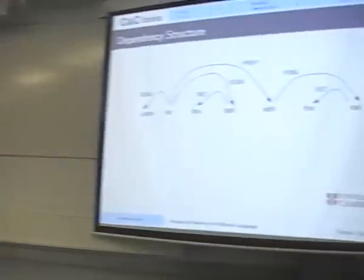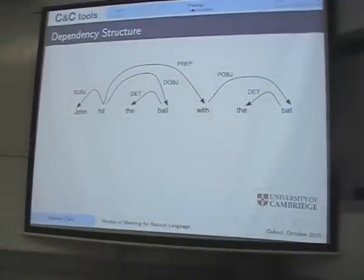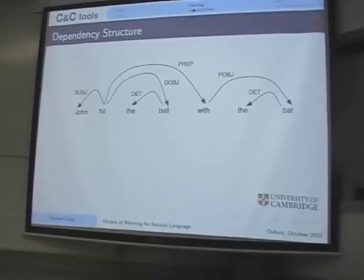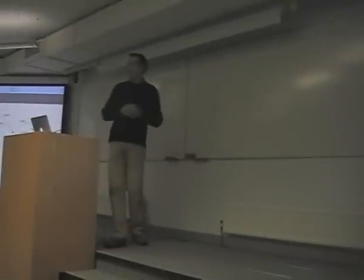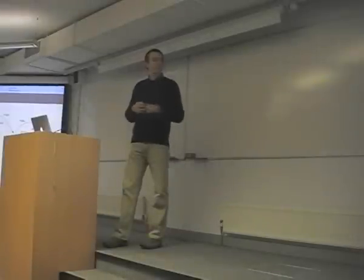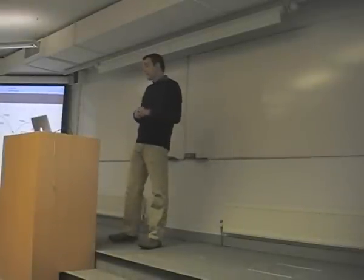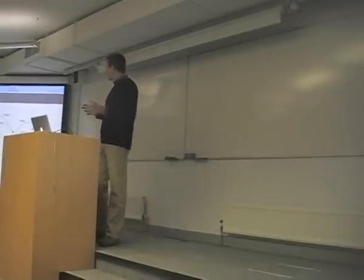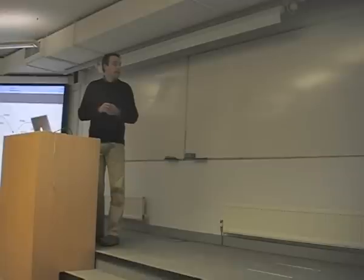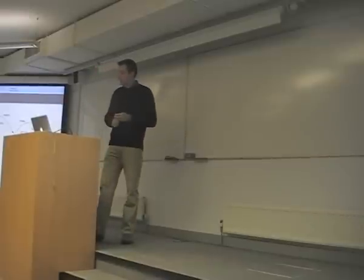In the last five years or so, the most popular form of structure for automatic parsing has been dependency structures. One reason people like this is that it's applicable to many different languages, particularly those with free word order. It provides a fairly direct representation of how words in the sentence are related — for example, John is the subject of the verb 'hit', or is a direct object.